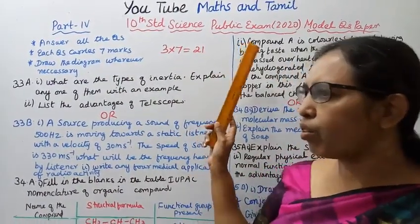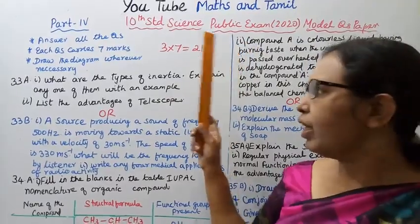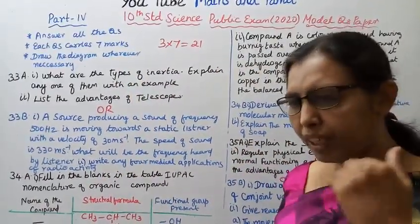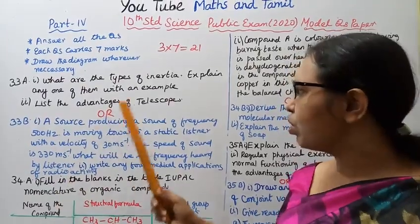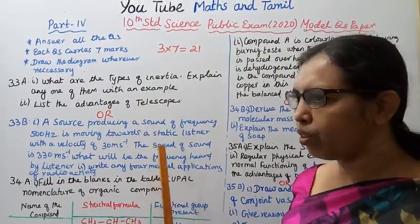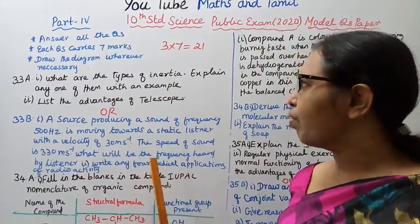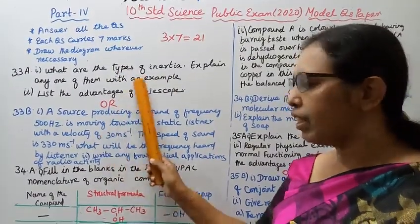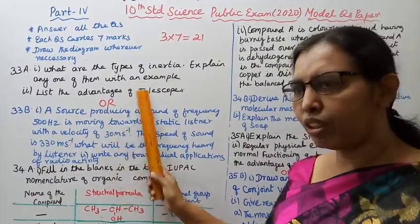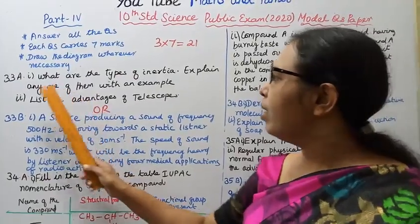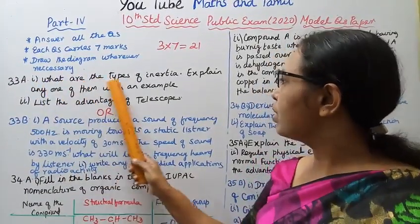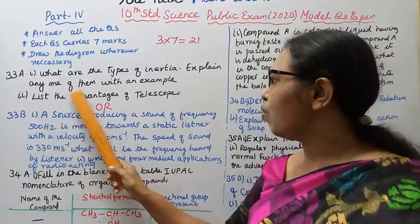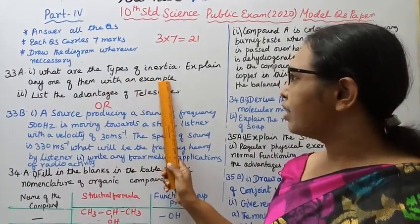This is a model question paper. If you have a public exam, these are the most important questions. Question 33A: What are the types of inertia? Explain any one of them with an example.